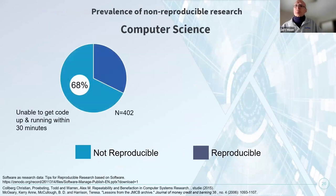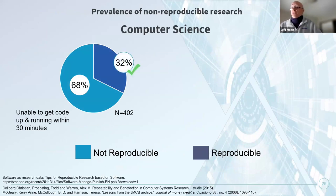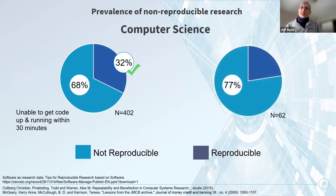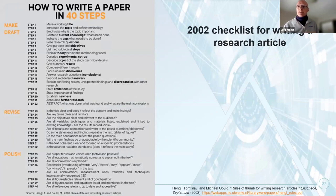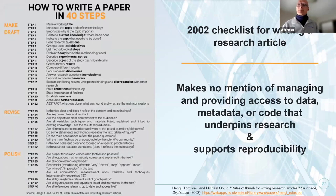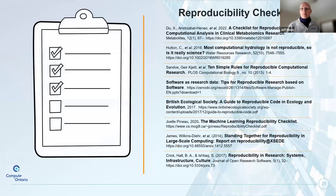Turning to computer science: code from 68% of articles in one study could not be made to run within 30 minutes, and in a second study 77% of articles could not be reproduced. Given that publishing academic papers — not good data management — was and still is the primary currency of academic advancement as measured by promotion and tenure, it is perhaps not surprising that a 2002 checklist for writing academic research articles makes no mention of managing or providing access to data, metadata, or code. I'm happy to report, however, that progress has been made, with eight reproducibility checklists dating from 2014 to 2022.